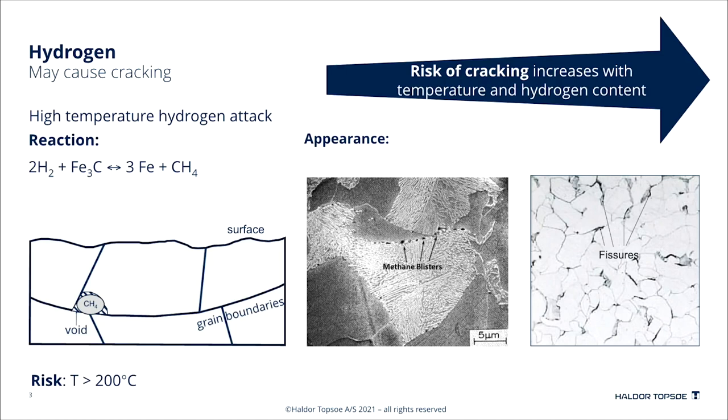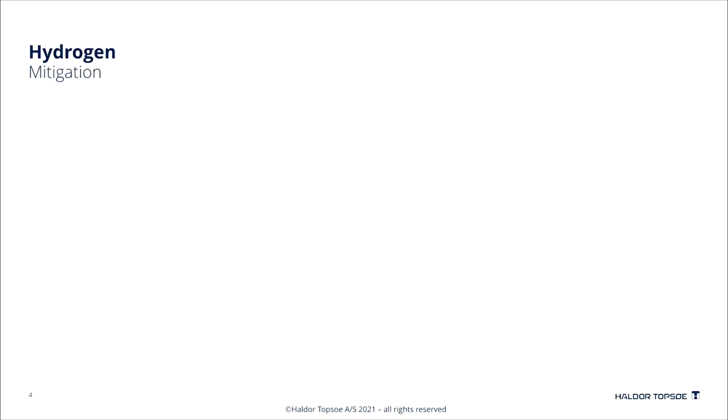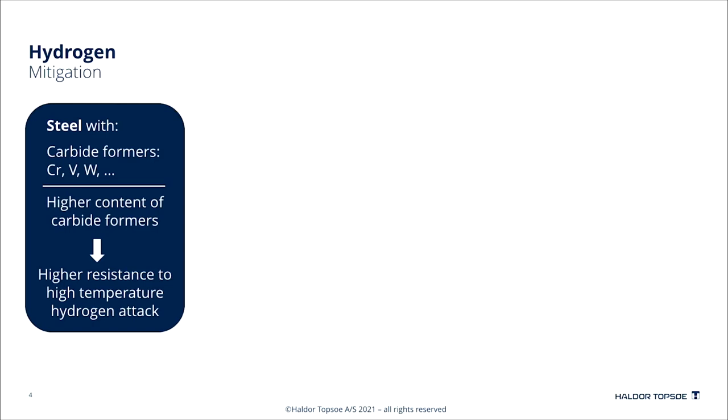The risk increases with increasing temperature and hydrogen content. In order to have a steel that has sufficient resistance to high-temperature hydrogen attack, it must contain carbide formers like chromium, vanadium and tungsten. The more it has of these carbide formers, the higher is the resistance.